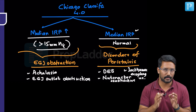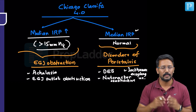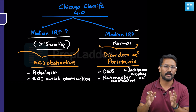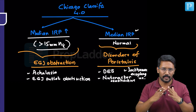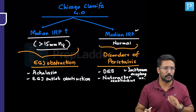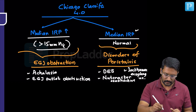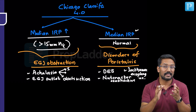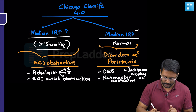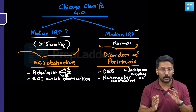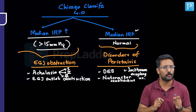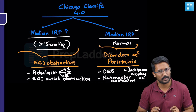If given HRM or high resolution manometry data, your eye should first search for the median integrated relaxation pressure, because that helps categorize these two sets of disorders. Once classified as achalasia, it can be further categorized into three types: type 1, which is classical achalasia; type 2; and type 3, which is also called vigorous achalasia.